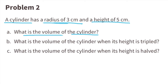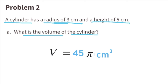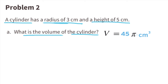Problem number two. A cylinder has a radius of 3 centimeters and a height of 5 centimeters. Part A: What is the volume of the cylinder? To find the volume, multiply π times r squared times the height. Substituting r with 3 and h with 5, the equation reads: volume equals π times 3 squared times 5. Three squared is 9, and 9 times 5 is 45. So the volume is 45π centimeters cubed.